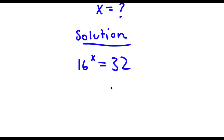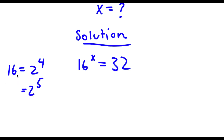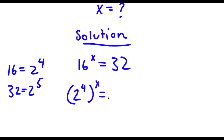So 16 is the same thing as 2 to the power of 4. And 32 — since we want to make both of these the same base, I need to find what power of 2 makes 32. Well, 2 to the power of 5 is double of 16, and double of 16 is 32. So 32 is equal to 2 to the power of 5. Now if I replace 2^4 for 16 and 2^5 for 32, I get 2 to the power of 4 to the power of x is equal to 2 to the power of 5.